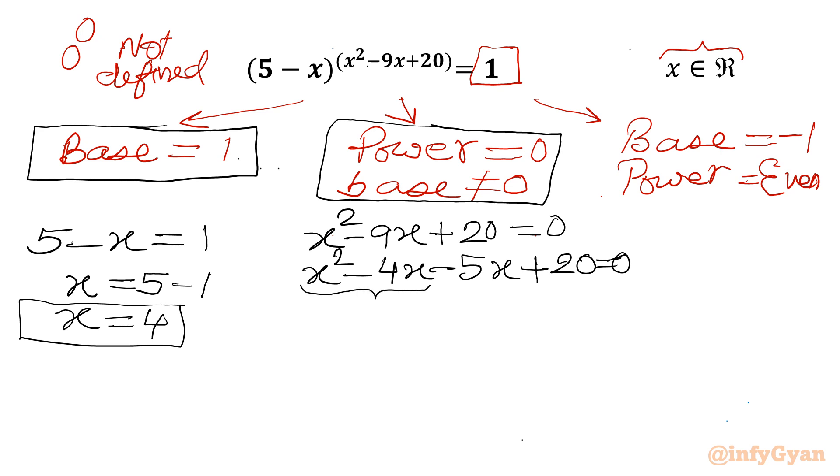Now from first two terms we can take x common out, so in the bracket x minus 4. From last two terms we can take negative 5 common out, so in the bracket we will get x minus 4 once again. So factors will become x minus 4 times x minus 5 equal to 0. So x will be equal to 4 and 5.